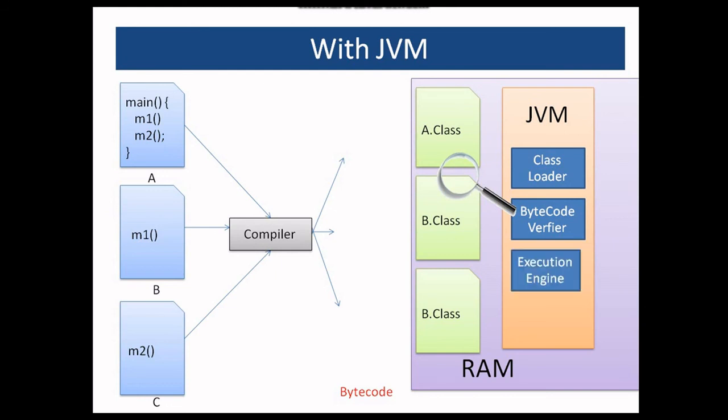And then finally, the execution engine converts it to the native machine code, which executes on the processor. So this is how JVM makes Java code platform independent and more secure.